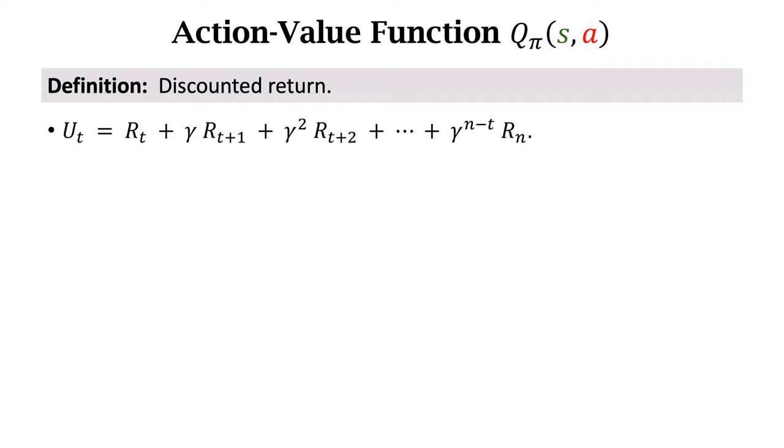Then I would know whether Mario is close to win or lose. Unfortunately, at time t, the return UT is a random variable. We don't know its value. Just like before tossing a coin, I don't know whether the outcome will be head or tail. We don't know UT. If we don't know UT, then how can we use UT to evaluate the current situation?